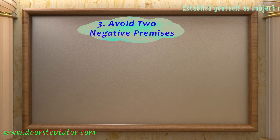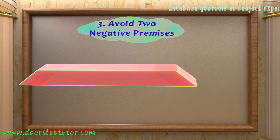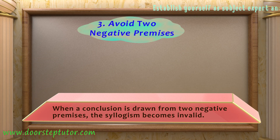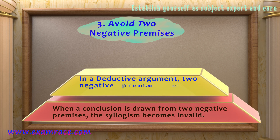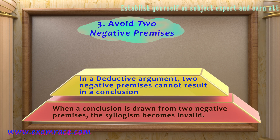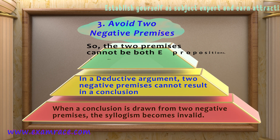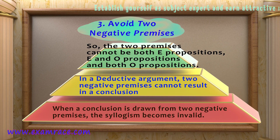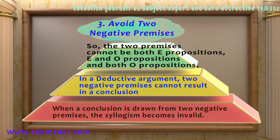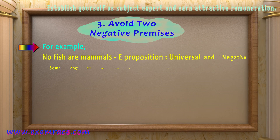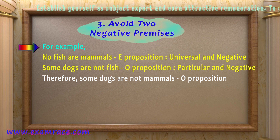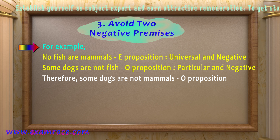Rule 3: Avoid two negative premises. When a conclusion is drawn from two negative premises, the syllogism becomes invalid. In a deductive argument, two negative premises cannot result in a valid conclusion. The two premises cannot both be E propositions, or E and O propositions together, or both O propositions together. For example: 'No fish are mammals; some dogs are not fish; therefore some dogs are not mammals.'